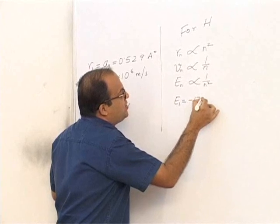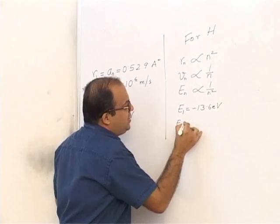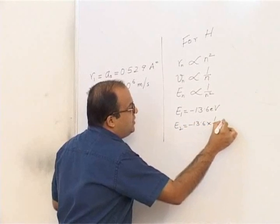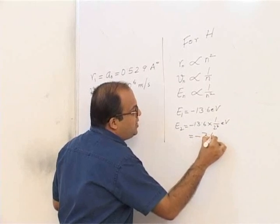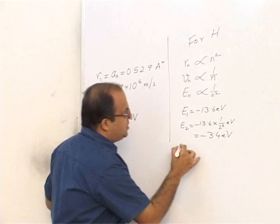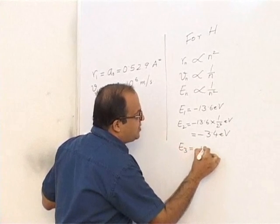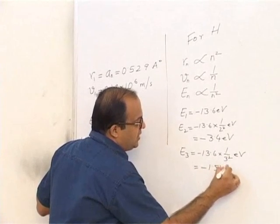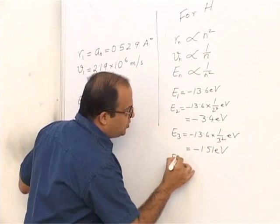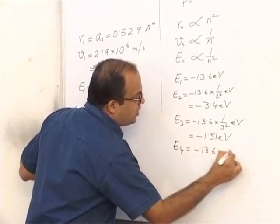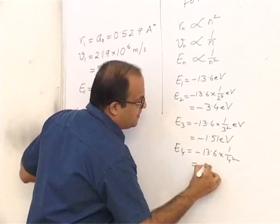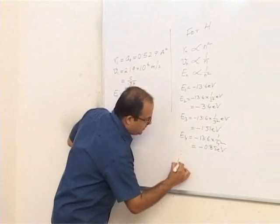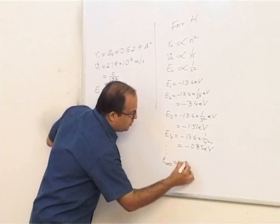Looking at specific energy values: E₁ = −13.6 eV, E₂ = −13.6 × (1/4) = −3.4 eV, E₃ = −13.6 × (1/9) = −1.51 eV, E₄ = −13.6 × (1/16) = −0.85 eV. The energy in the orbit at infinity equals 0.